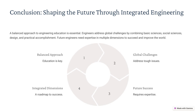To become successful engineers, you need a balanced approach that integrates all four dimensions: basic sciences for fundamental knowledge and innovation, social sciences for engineering solutions with societal impact, design for creative and efficient problem solving, and practical accomplishment for execution and project management. By mastering these dimensions, you will be equipped to solve global challenges and shape the future.